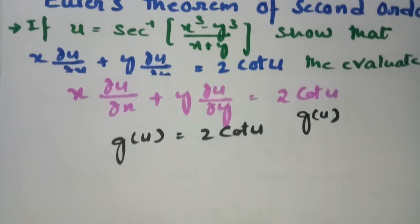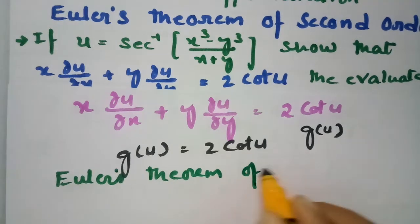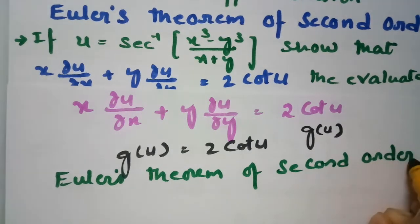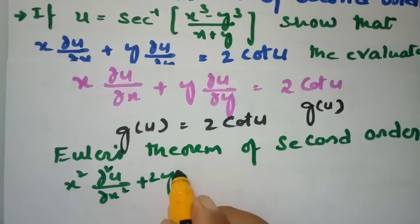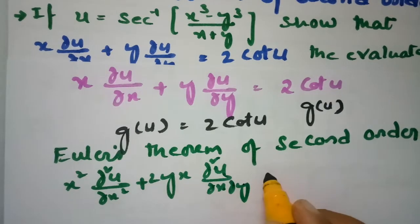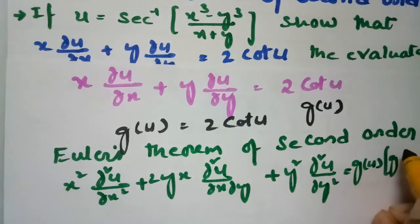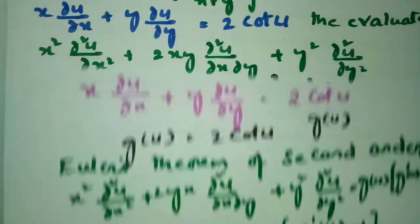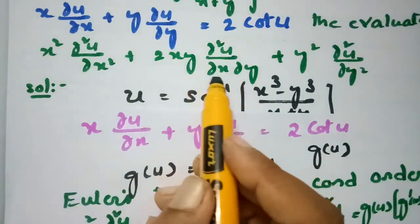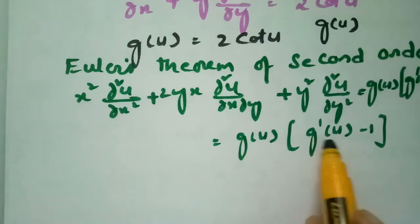According to the Euler's theorem of second order, x² ∂²u/∂x² plus 2xy ∂²u/∂x∂y plus y² ∂²u/∂y² equals g(u) into g'(u) minus 1. The formula is g(u) into g'(u) minus 1. What is g(u)? g(u) is nothing but 2 cot u.